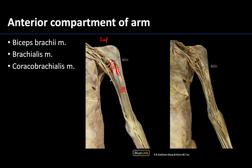In order to see the other two muscles of the anterior compartment you need to reflect or remove the biceps brachii, which has been done in this deeper dissection. The coracobrachialis muscle is more superiorly placed and shorter. A distinguishing feature is that the musculocutaneous nerve will actually pierce the coracobrachialis, and it is the musculocutaneous nerve that is the dominant nerve supply to this anterior compartment.